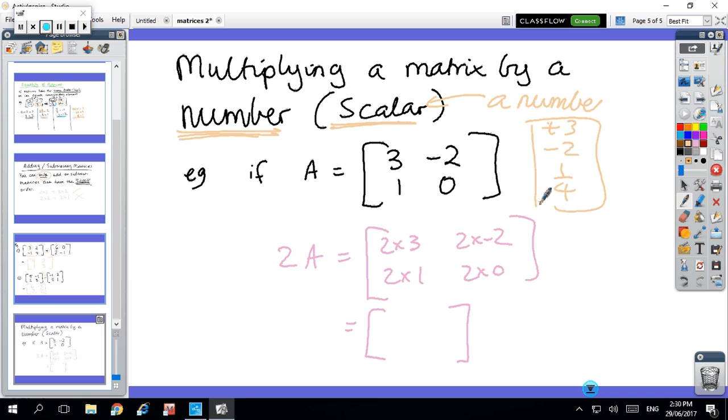For instance, if A is this matrix 3, minus 2, 1, 0, then 2 times A means you take every number and double it. So 2 times 3 equals 6, minus 4, 2, 0. Multiplying by a scalar is straightforward. You just multiply every element in the matrix by the scalar. This number could be anything, could be decimals, could be fractions, it doesn't matter. So there'll be questions to do with multiplying, adding and subtracting, and multiplying by a scalar.